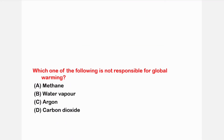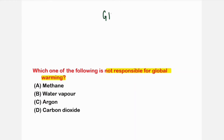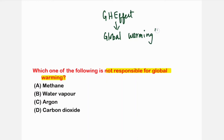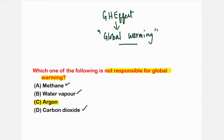The next question: which of the following is not responsible for global warming? Global warming is an effect of the greenhouse effect. Option C is the gas not responsible for global warming. Methane, water vapor, carbon dioxide, and chlorofluorocarbons are all responsible for global warming.